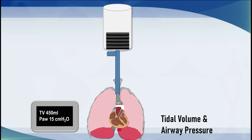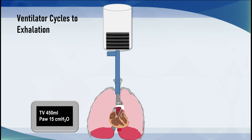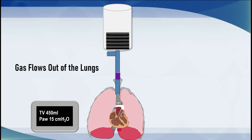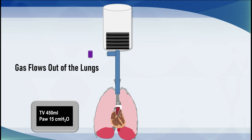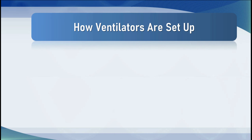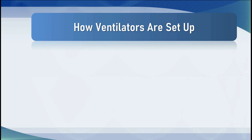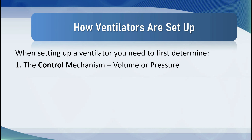Depending on how you set up the ventilator, it will cycle to exhalation and the gas that has been sent into the lungs is released and vented off through an exhalation valve. When setting up a ventilator, we first need to determine the control mechanism — volume or pressure.